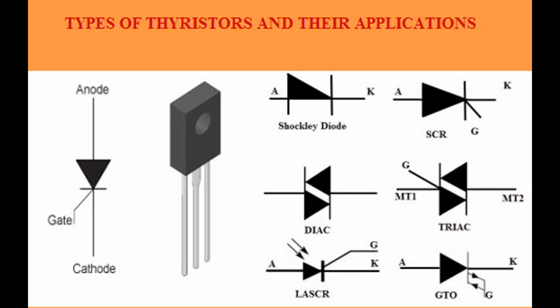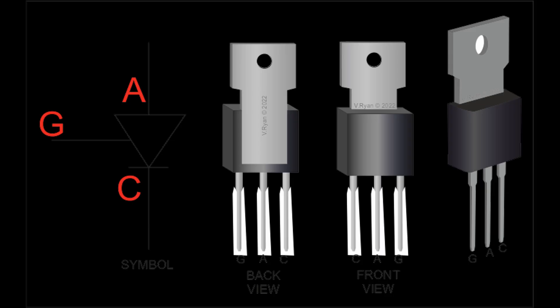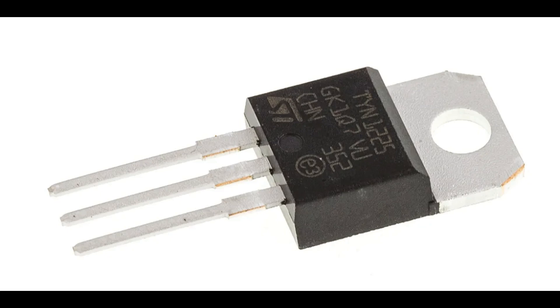Forward blocking mode behavior: junctions J1 and J3 are forward biased, junction J2 is reverse biased, and the thyristor remains in a high impedance state, preventing current flow from anode to cathode — the device is in the off state, blocking forward current. Forward conducting mode condition: a positive voltage is applied to the gate terminal relative to the cathode while the anode is still positive with respect to the cathode. Gate triggering: applying a positive gate pulse injects charge carriers into the P2 layer, reducing the reverse bias across junction J2 and initiating the breakdown of J2.